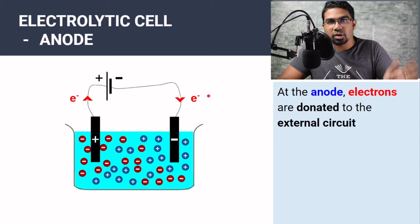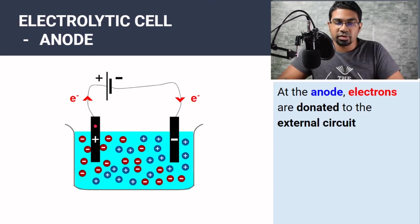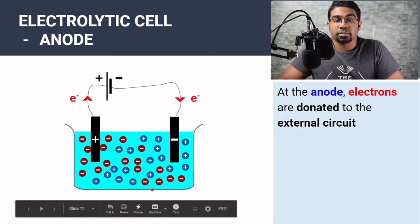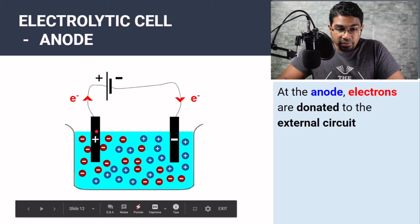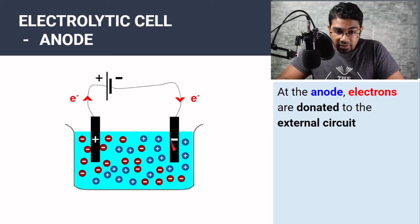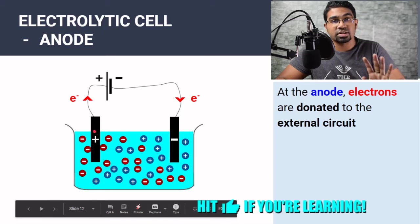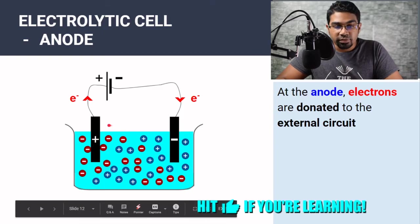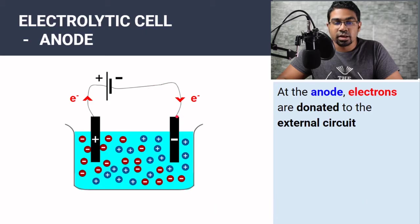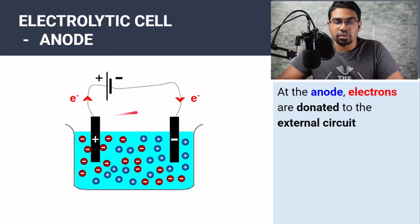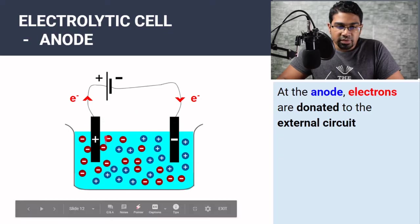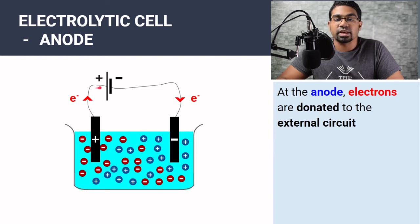This is the external circuit. Whenever we talk about movement of electrons, we talk about movement of electrons in the external circuit. Electrons do not flow in the electrolyte. Ions are discharged here, but electrons do not flow from this negative electrode to the positive electrode — that does not happen. It only flows from electrode to electrode in the external circuit. Earlier we already found the direction of flow of electrons, so now we can define which is our anode. Here, the positive electrode also acts as the anode because this is where electrons are donated to the external circuit.